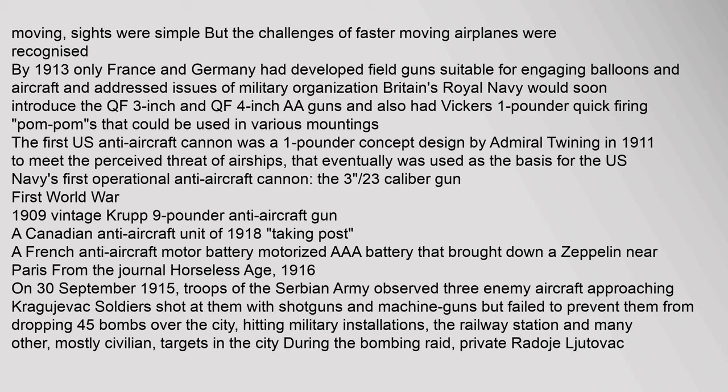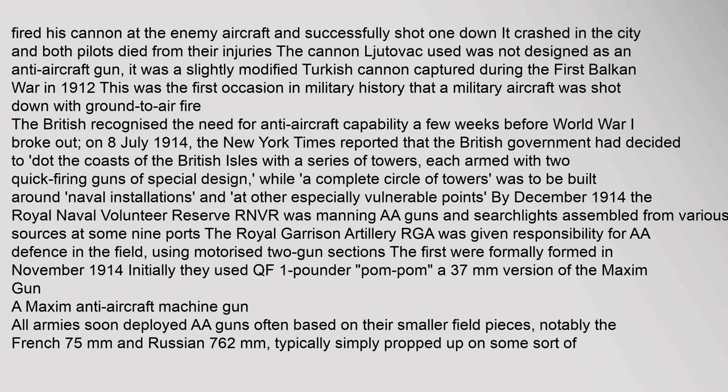On 30 September 1915, troops of the Serbian army observed three enemy aircraft approaching Kragujevac. Soldiers shot at them with shotguns and machine guns but failed to prevent them from dropping 45 bombs over the city, hitting military installations, the railway station, and many civilian targets. Private Radoje Ljutovac fired his cannon at the enemy aircraft and successfully shot one down; it crashed in the city and both pilots died from their injuries. The cannon Ljutovac used was not designed as an anti-aircraft gun — it was a slightly modified Turkish cannon captured during the First Balkan War in 1912. This was the first occasion in military history that a military aircraft was shot down with ground-to-air fire.